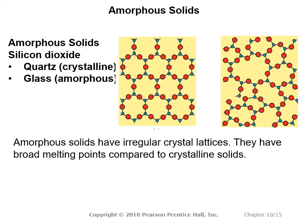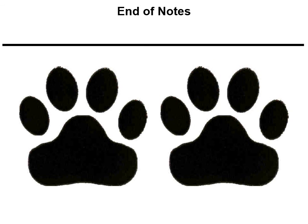Amorphous solids are solids that don't have a nice regular array, unlike crystalline solids. An example of an amorphous solid is glass, where silicon dioxide is melted down, poured into a mold, and very quickly cooled. Amorphous solids have very broad melting points compared to crystalline solids because the bonds are in different arrangements with different strains on them, so they don't melt at a sharp single point. And that is the end of the notes.